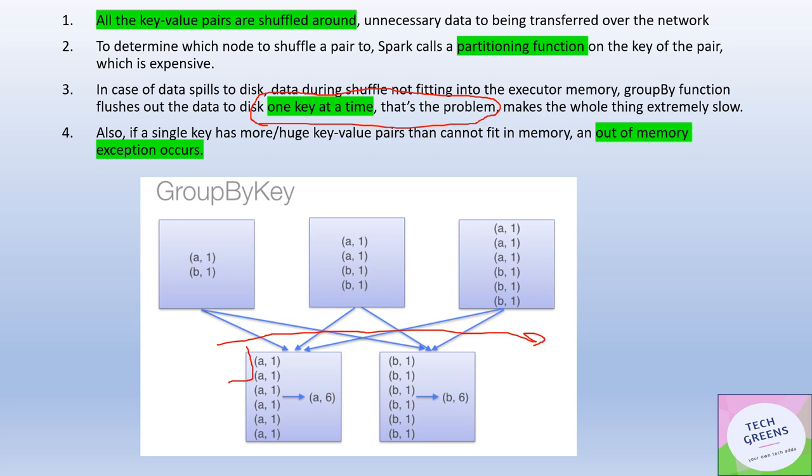This is a usual case - you do not have enough memory, you're trying to work on a bigger dataset that can't fit into the executor memory and then you have to spill it on the disk, which is fine. But the problem with GroupBy is it is moving, flushing that data one tuple or one key at a time. That is the biggest problem which makes the whole thing extremely slow.